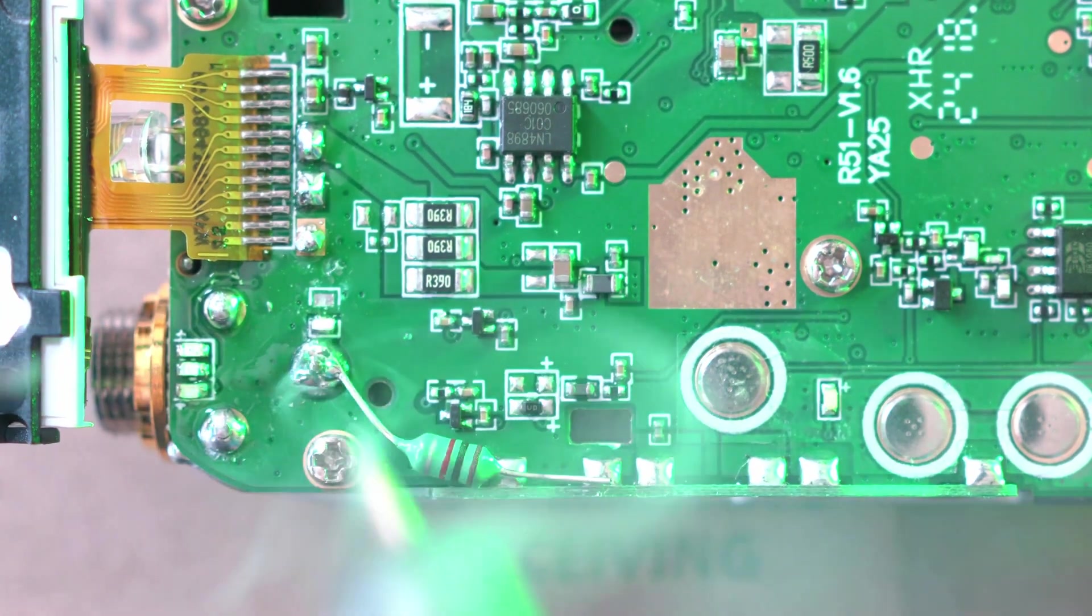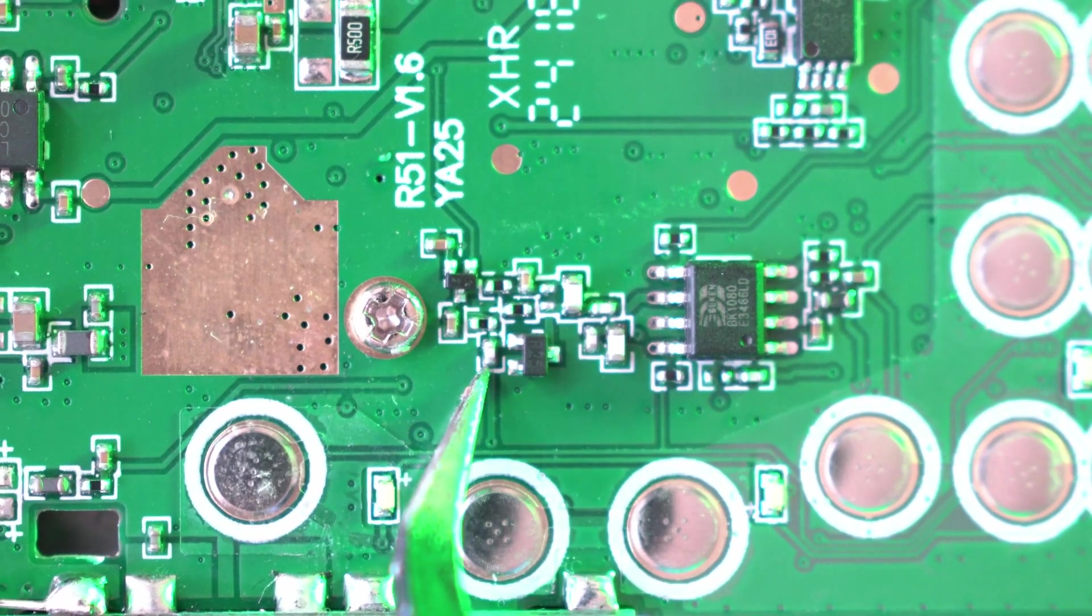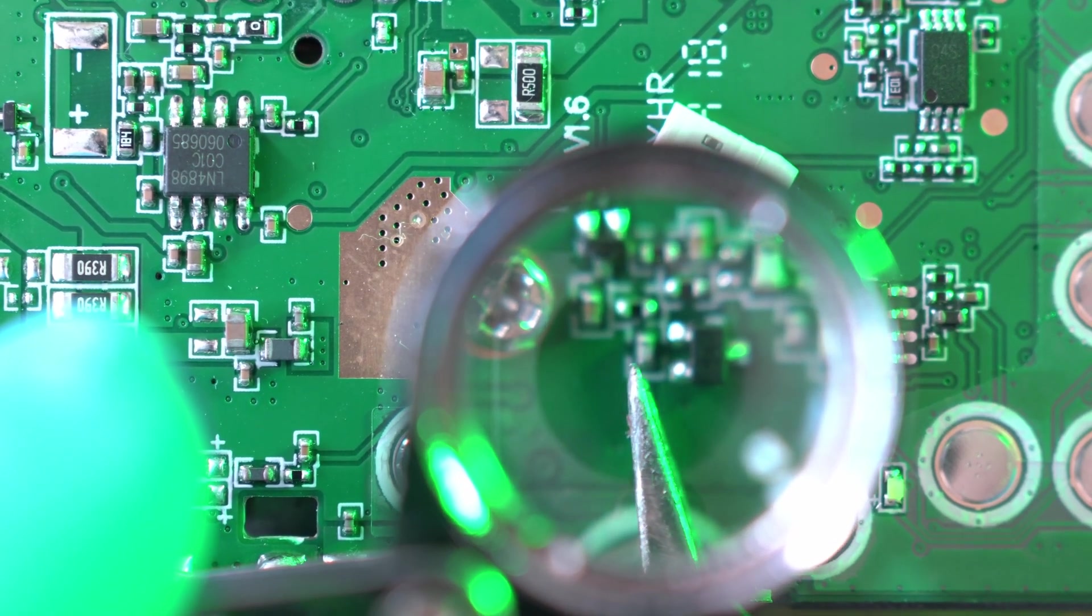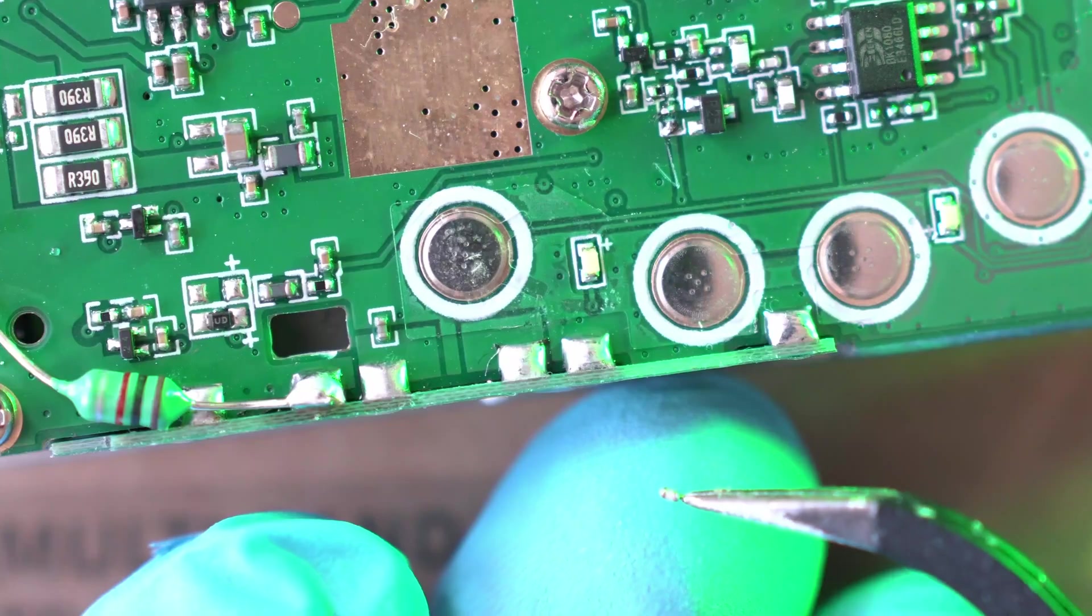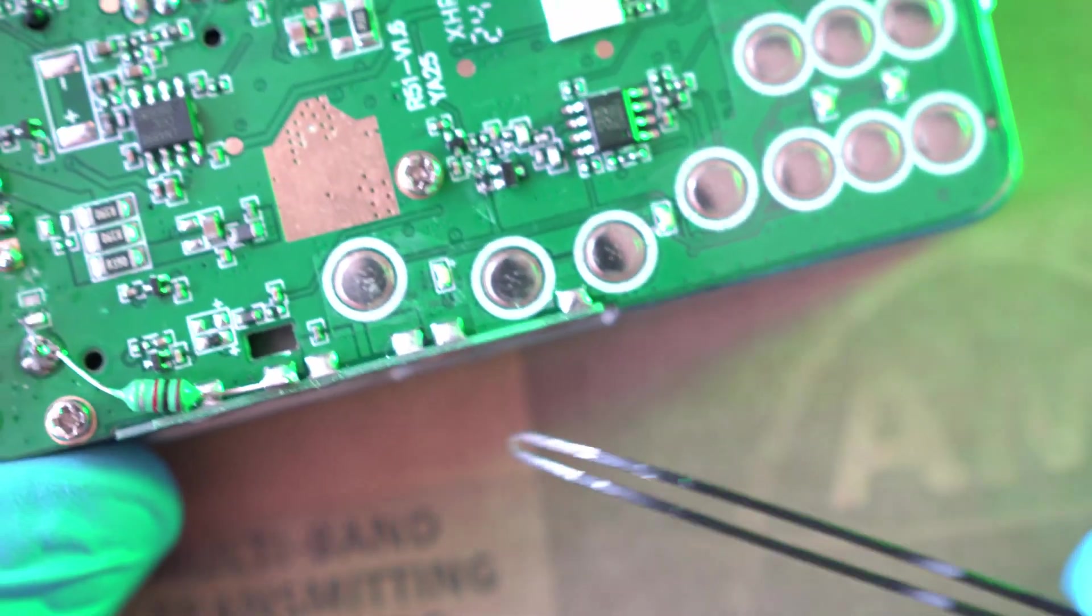By the way, I have tutorials on how to install HF mode version 1 and version 2 as well. Next step is to replace this tiny component with one provided. This thing is so tiny that it is safe to say that it is one of the most difficult steps in this mod.